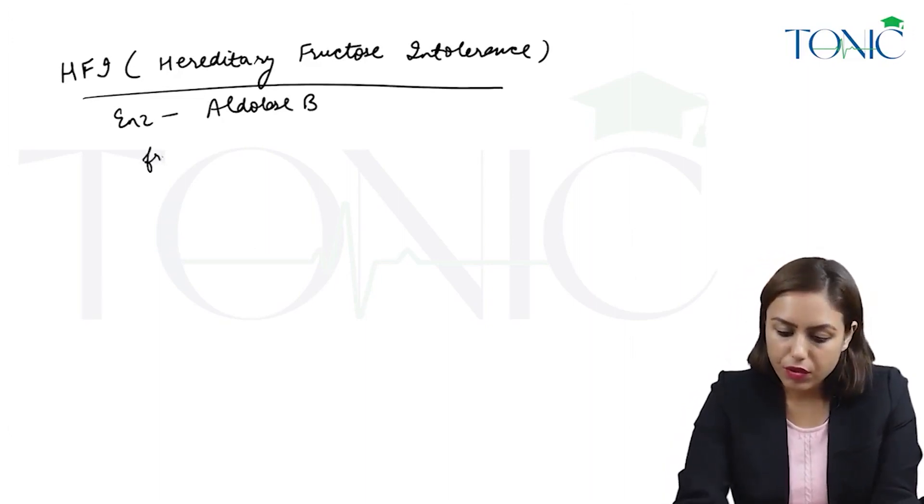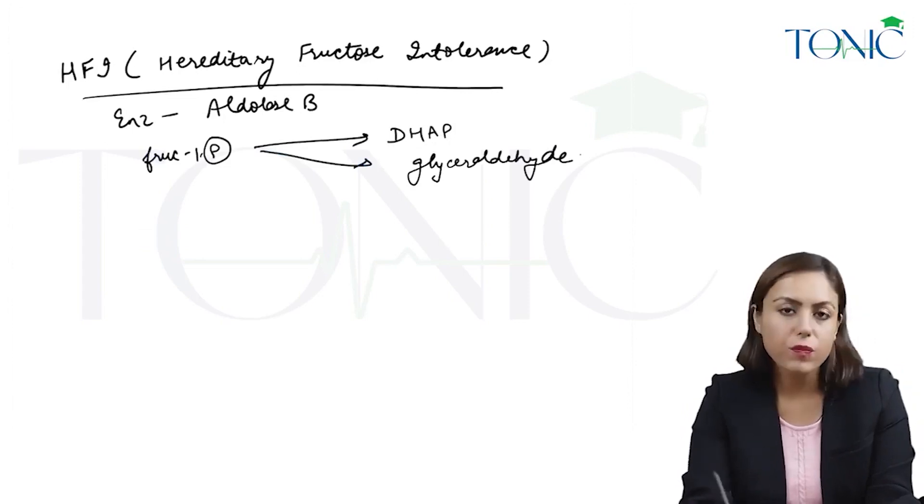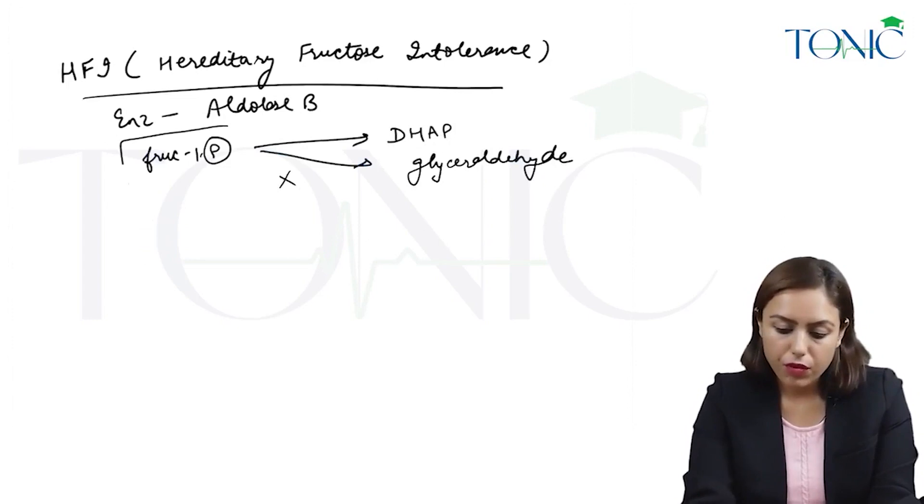Aldolase B converts fructose 1-phosphate into dihydroxyacetone phosphate and glyceraldehyde. When this step doesn't occur, fructose 1-phosphate accumulates.